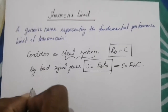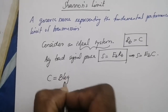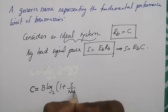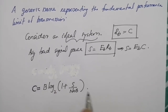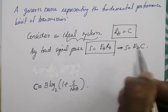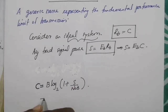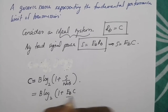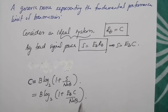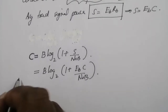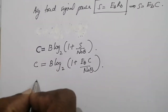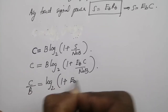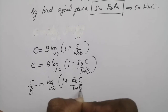We know that C equals B·log₂(1 + S/N₀B). Since S equals Eb·Rb which equals Eb·C for an ideal system, this becomes C equals B·log₂(1 + Eb·C/N₀B). Therefore, C/B equals log₂(1 + Eb·C/N₀B), where C/B is the bandwidth efficiency.